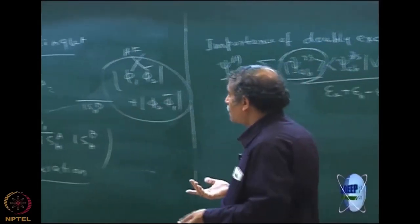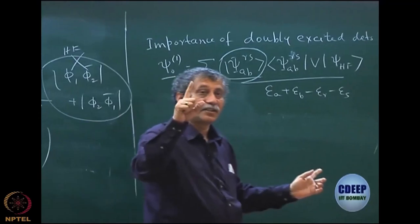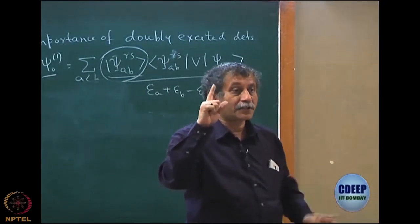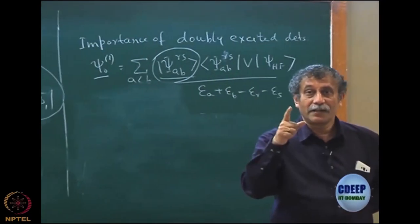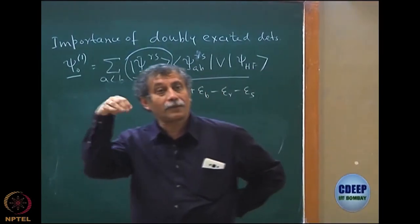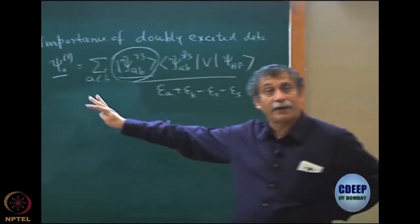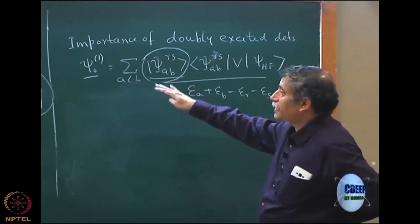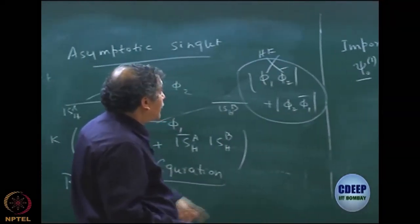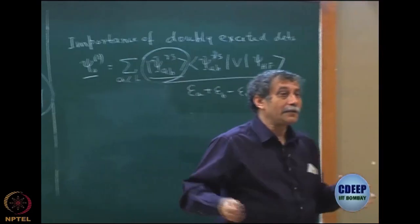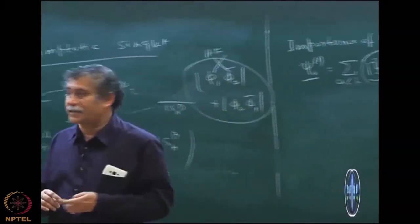If I just use RHF (φ₁φ₁̄) and then do a first-order perturbation correction to the wave function — remember for energy MP2 means second order, but for the wave function the first correction is ψ⁰₁ — am I improving the result in the asymptote? We want to discuss the behavior of ψ⁰₀ + ψ⁰₁ as R tends to infinity along with the Hartree-Fock. Does it behave even qualitatively correctly as R_HH tends to infinity?